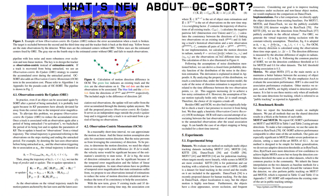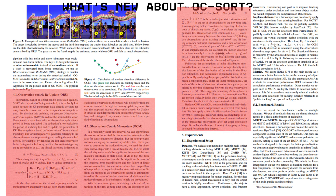What's new about OCSort? OCSort changes things up by being observation-centric — it pays more attention to the real detections from the video. Observation-Centric Re-Update (ORU): when an object reappears after being hidden, OCSort uses its actual observed position to correct past prediction errors, building a virtual trajectory between the last known and current position to recalibrate tracking. Observation-Centric Momentum (OCM): this leverages the object's movement direction based on real, observed data, helping the tracker better associate new detections with the correct object and reducing identity switches.